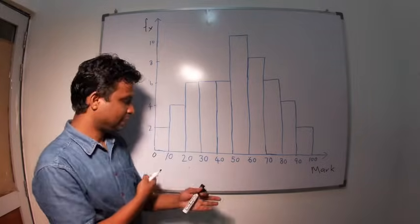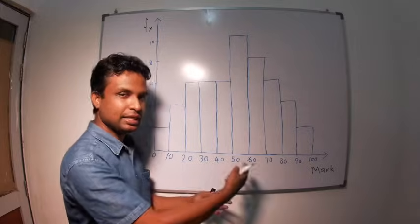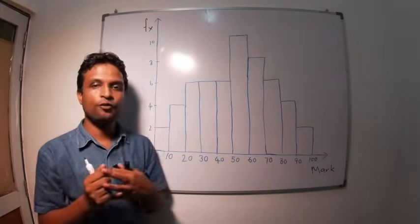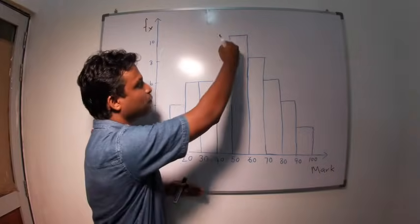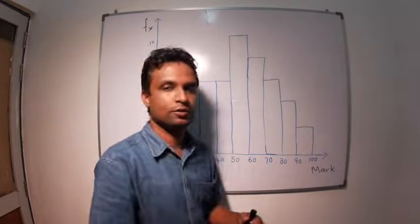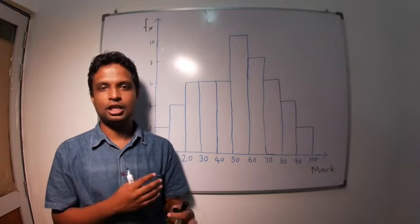In a histogram, in the x-axis we plot the different possibilities, and in the y-axis we plot the frequency. Now, you can understand that there's a shape for this distribution. That is how we plot variability in a graph.